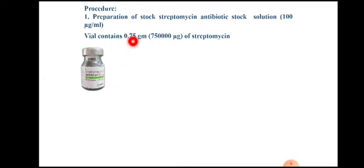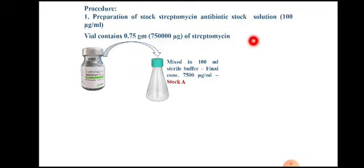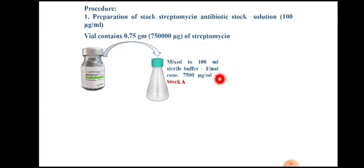The streptomycin vial contains 0.75 grams, which equals 750,000 micrograms. This is transferred into 100 ml of sterile phosphate buffer. So 100 ml contains 750,000 micrograms, meaning 1 ml contains 7,500 micrograms per ml. This is the concentration of Stock A.